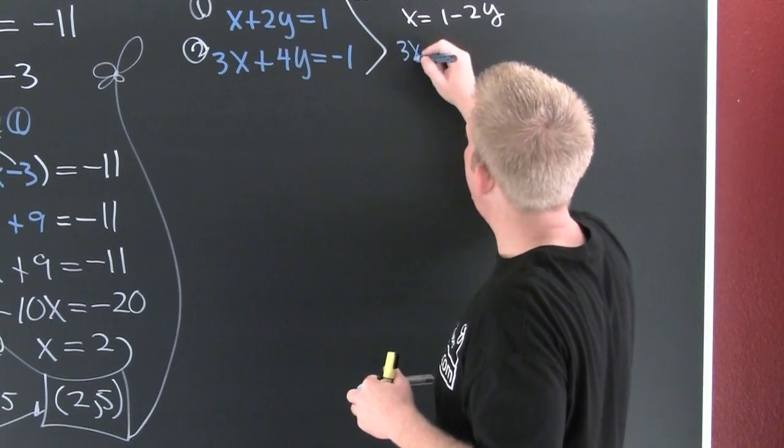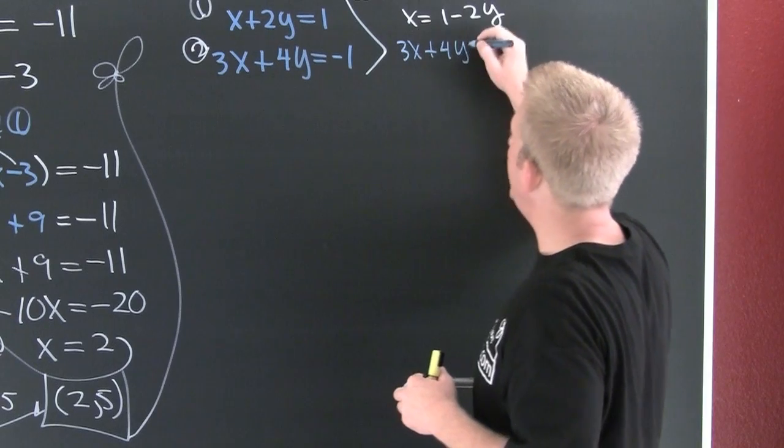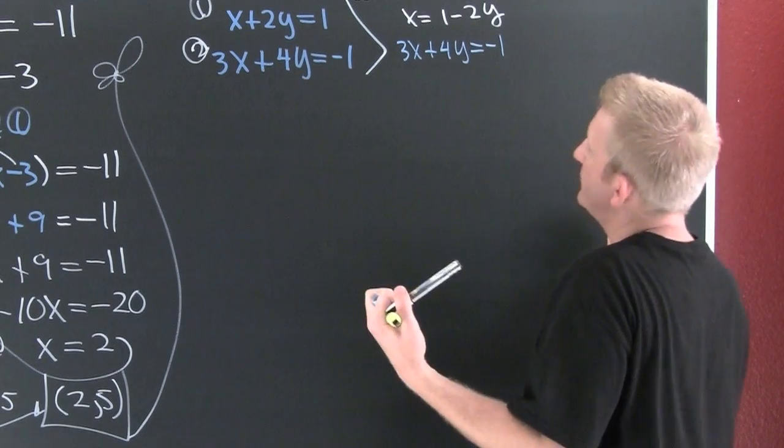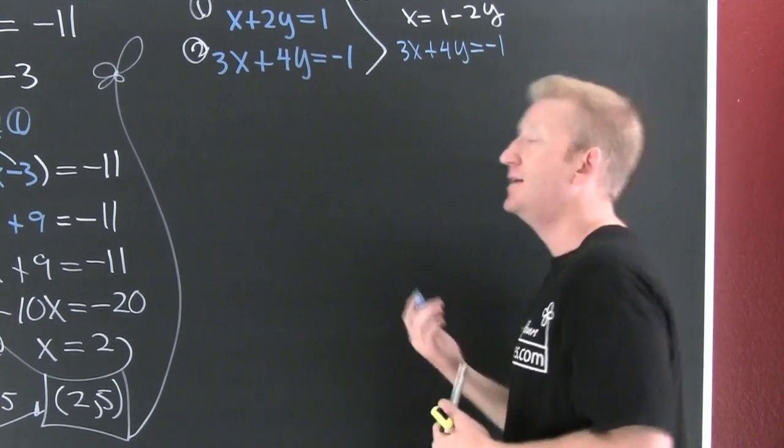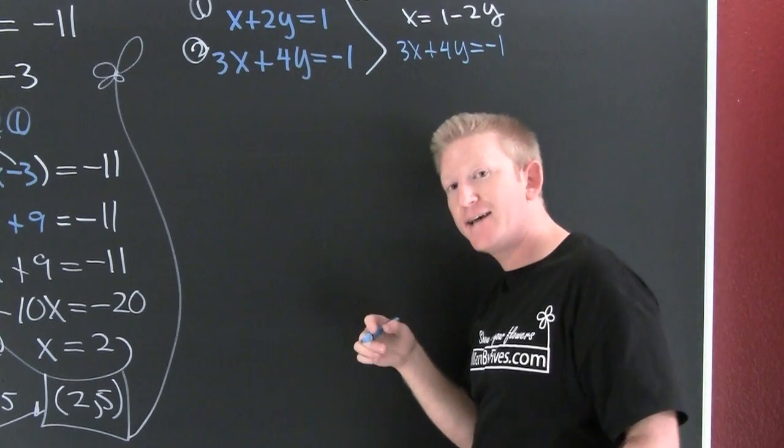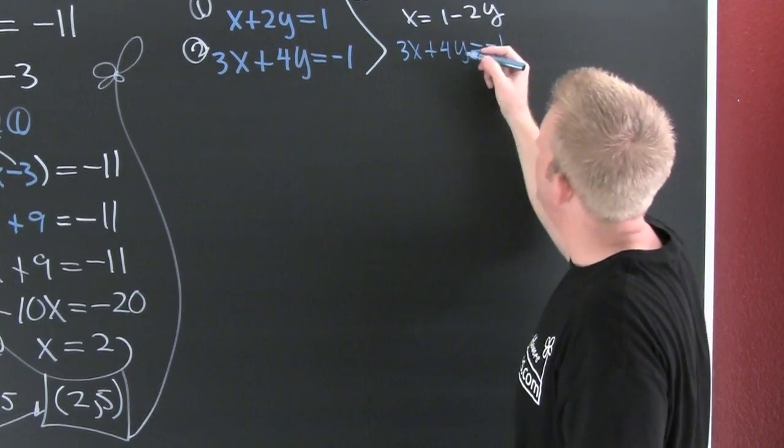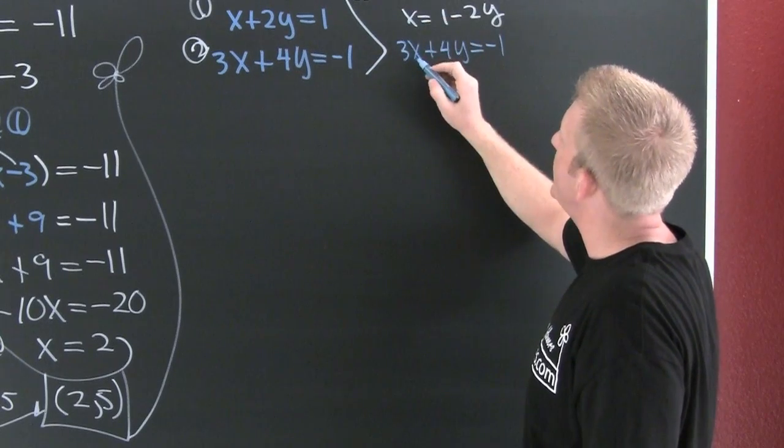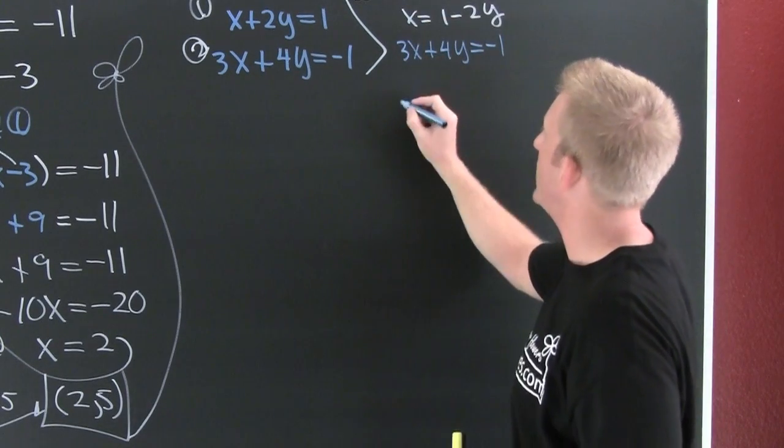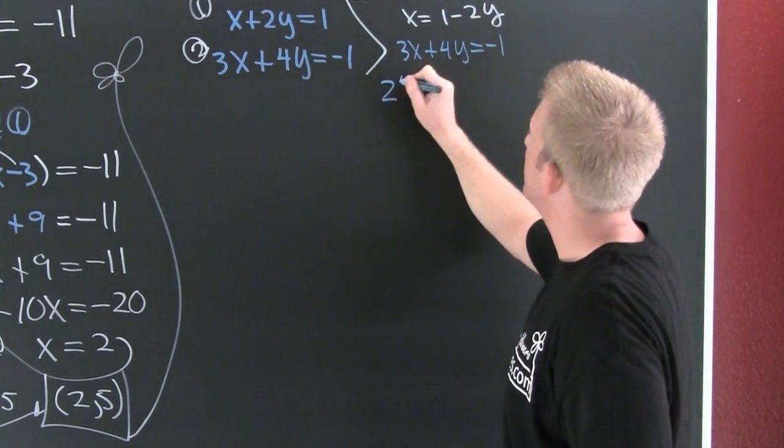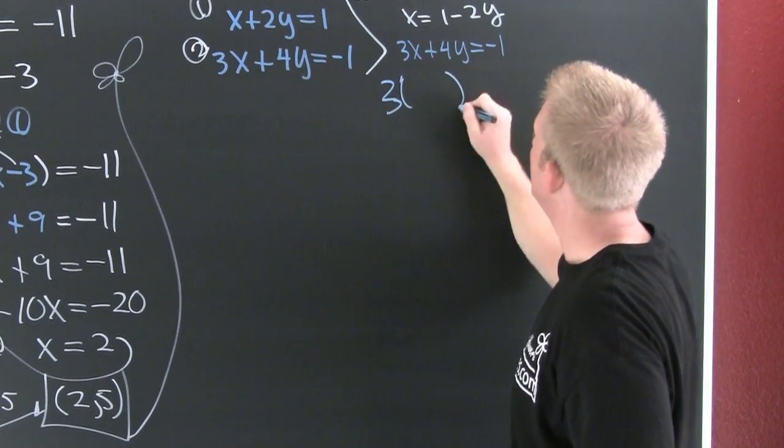And then here this says 3x plus 4y is minus 1. Now we turn this one just like that last one. I'm gonna sub this guy right in there. Three times what's my new x? My new x is 1 minus 2y.